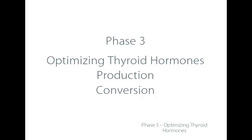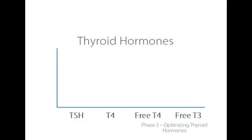We're going to look at thyroid hormones — whether there's adequate production, how well the body is converting T4 to T3, and how well the body is able to utilize the activating thyroid hormone T3. We'll do this graphically, which I think is the easiest way to understand the results from these thyroid lab tests.